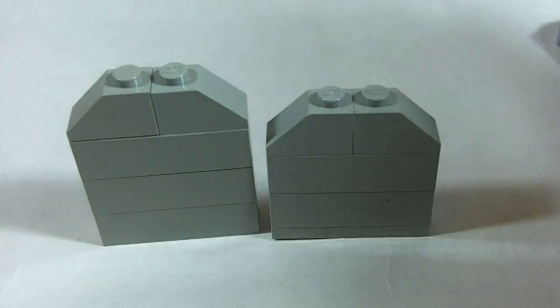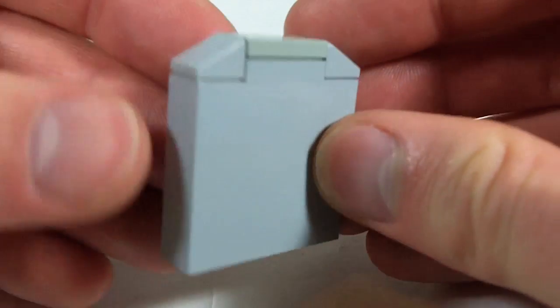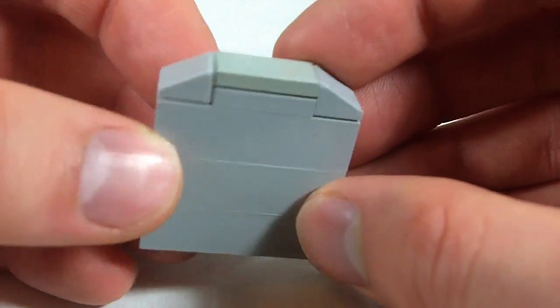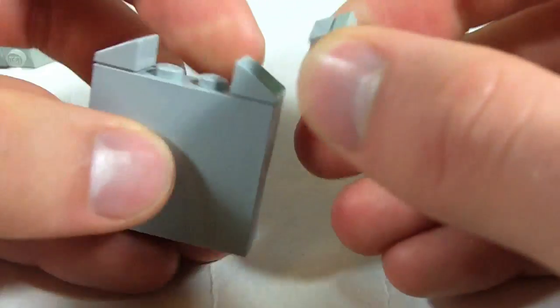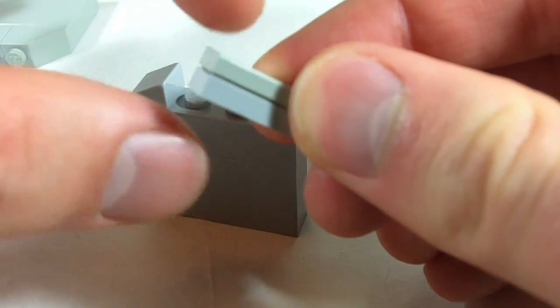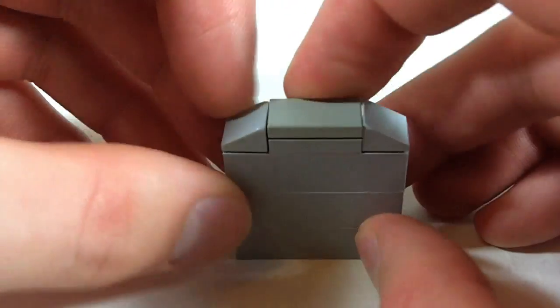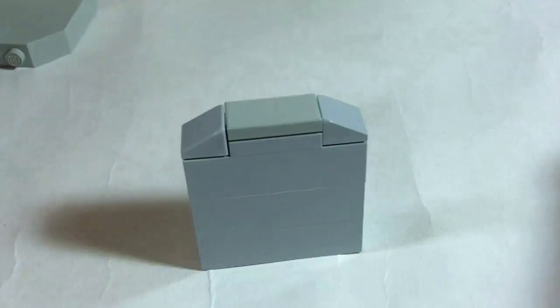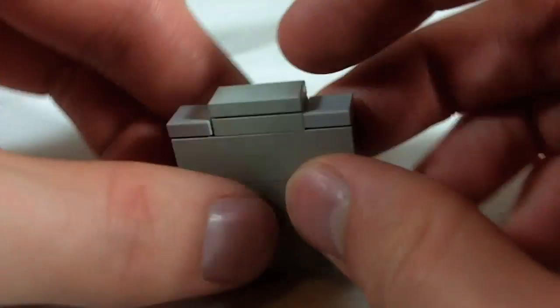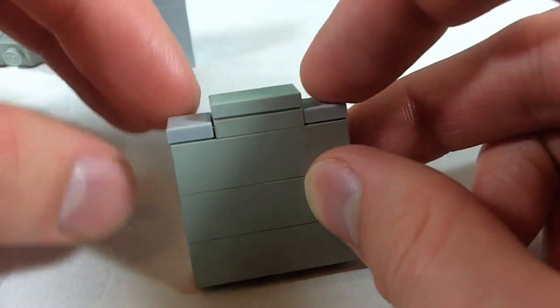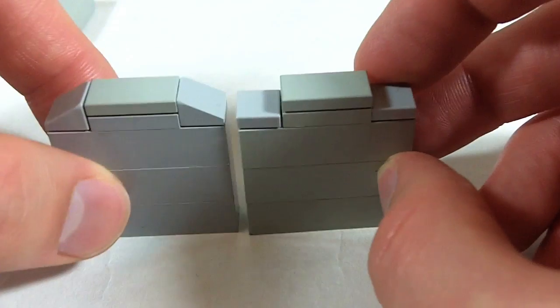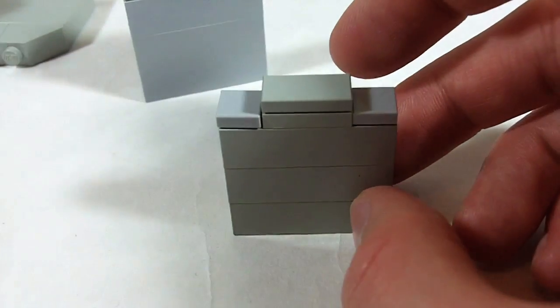However, if you want sort of a more curvy top, another way to do it is - so this is again three bricks, three 1x4 bricks, and this is a 1x2 plate with a 1x2 tile and two little cheese slopes on the top. If you don't have cheese slopes, this one I just used some regular 1x1 tiles there for a different sort of look.